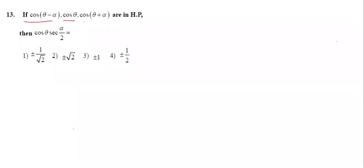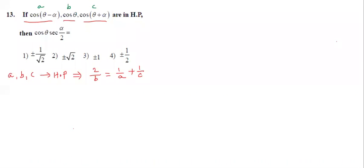Next problem: if cos(θ − α), cos θ, cos(θ + α) are in HP (harmonic progression), then find cos θ · sec(α/2). Here, if a, b, c are in HP, the condition is 2/b = 1/a + 1/c. This is the formula. Here a = cos(θ − α), b = cos θ, c = cos(θ + α). Use this formula.